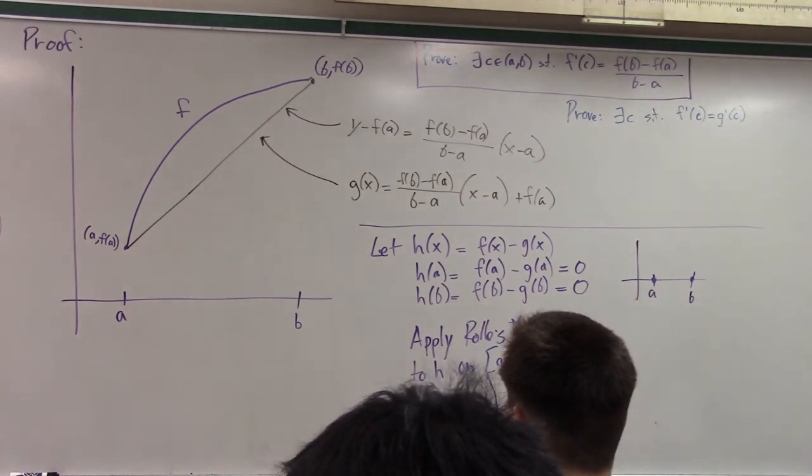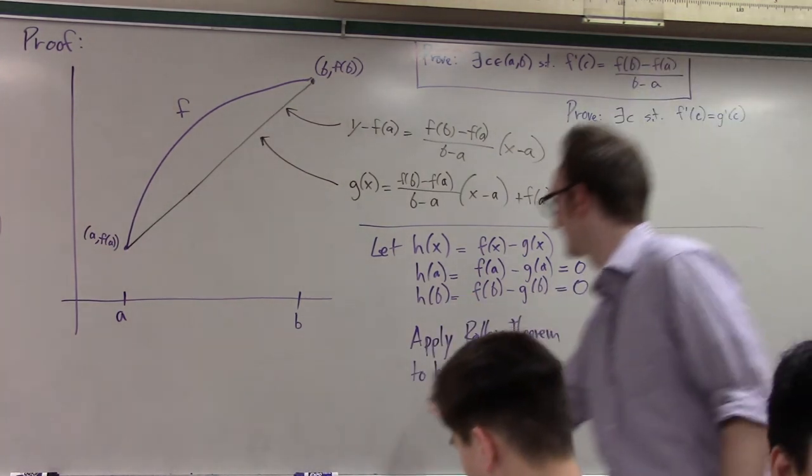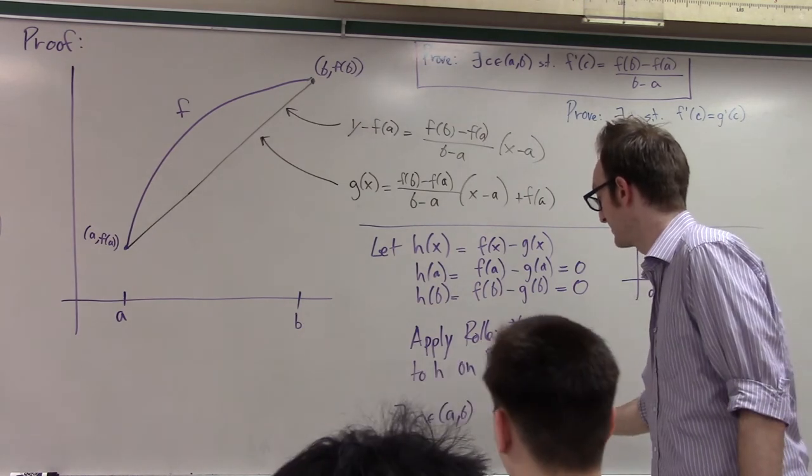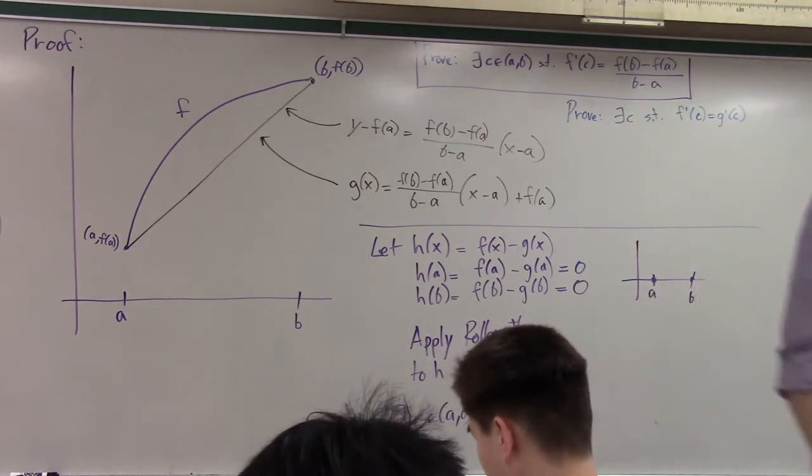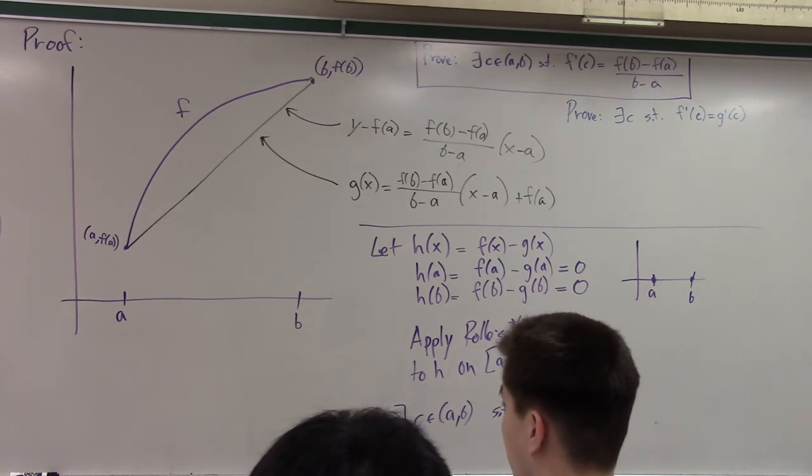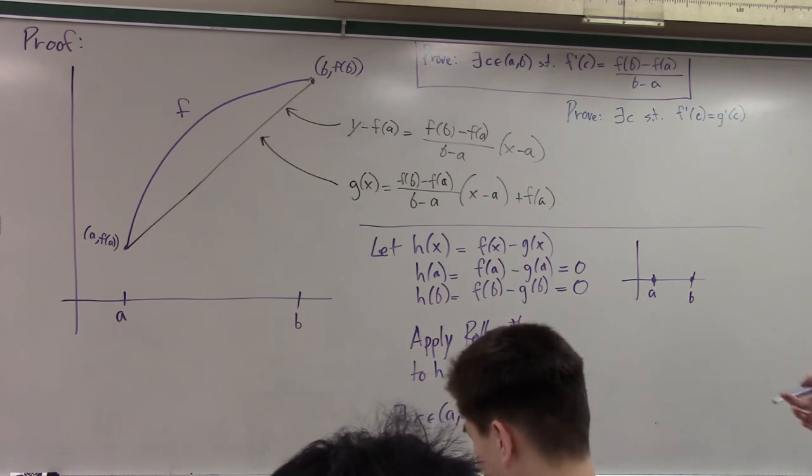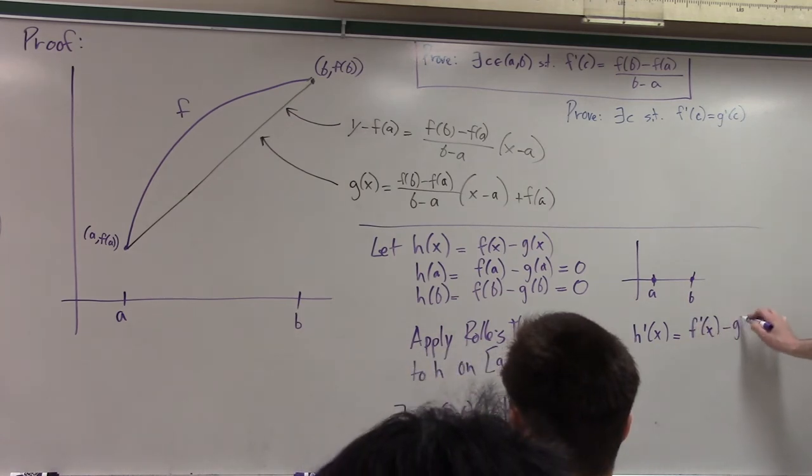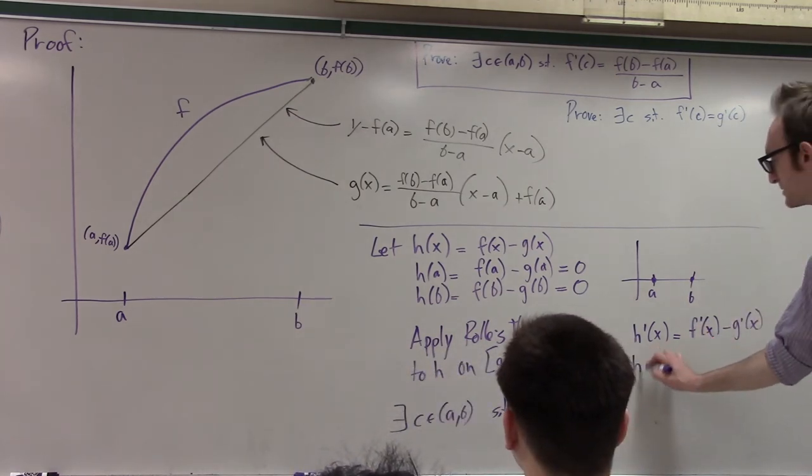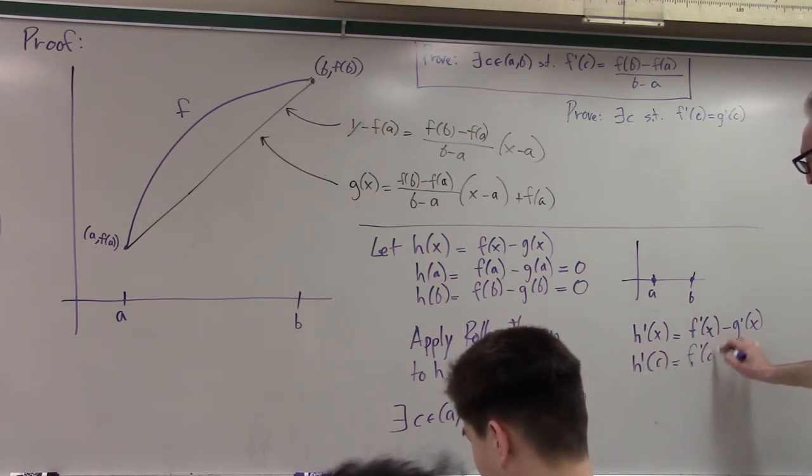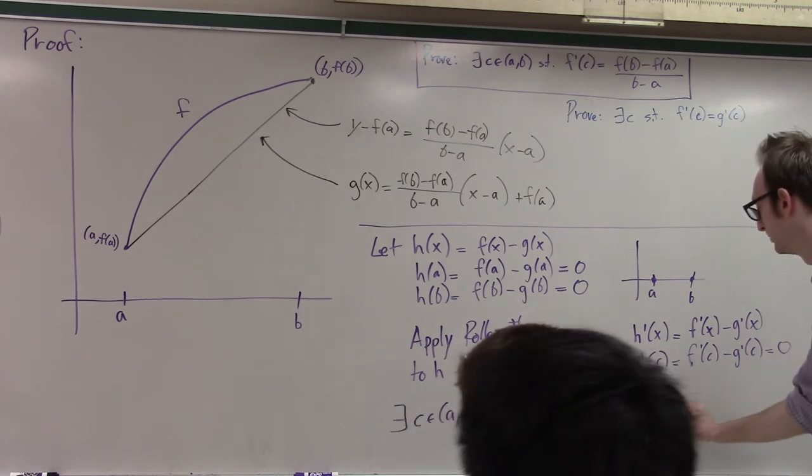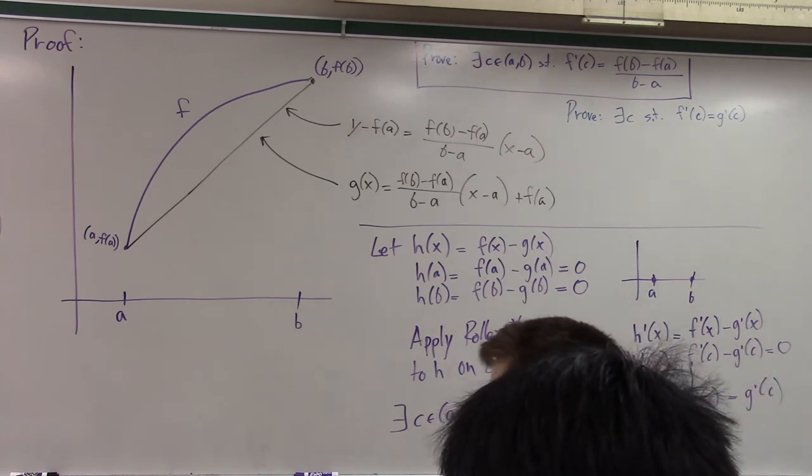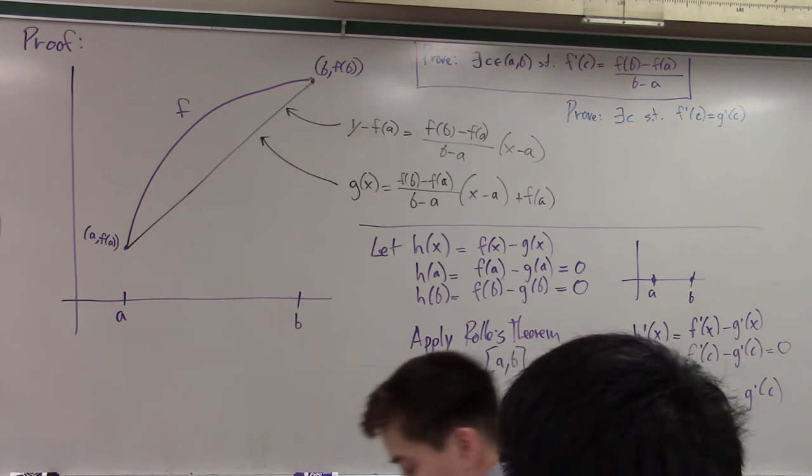There exists such that H prime of C is zero, right? That's what I know about this H function, that since it starts and ends at the same place, there's a place where the derivative of zero. But of course, and as someone else said, what is H prime of X? H prime of X is just F prime of X minus G prime of X. And so H prime of C is just F prime of C minus G prime of C. And if that's zero, then F prime of C equals G prime of C.